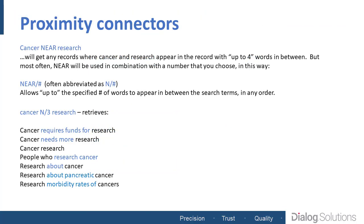Moving beyond the Boolean operators, there may be times when combining your terms with AND may be too broad. You might get records where your first search term is in the title and your second term is used only once near the end of a full-text record, so that while both terms are present, they're really not used in any relation to each other. For this reason, you may want to take control over how close together your search terms must appear, or even what order they're in — and that's where the proximity connectors come in. We have two of them, called NEAR and PRE.